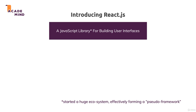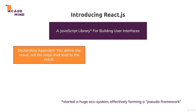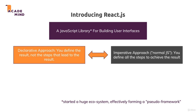We do so by following a declarative approach, which means that in React we define the result and maybe different states of the result — under which state we want to render what and show what on the screen — instead of the steps that lead to the result. That would be an imperative approach, which is basically what we have with vanilla JavaScript, where we have to define every step: add this element, add this CSS class to an element, remove this element.